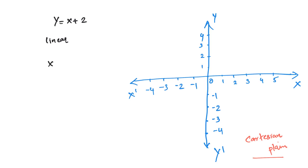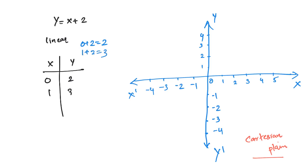Let's take x in different values. x is equal to 0, so y is equal to 2. Let's take x equal to 1, so y is equal to 1 plus 2, which equals 3. Let's take these 2 points in the graph. x equals 0 gives y equals 2 — that is the point.